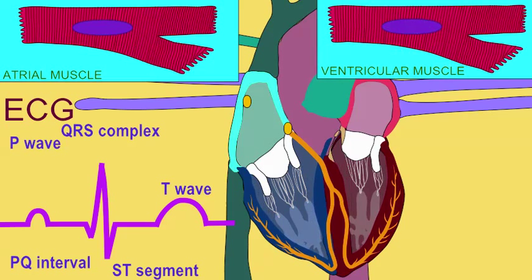And thus, as the cardiac cycle ends, there are no new electrical events. All four chambers are at rest.